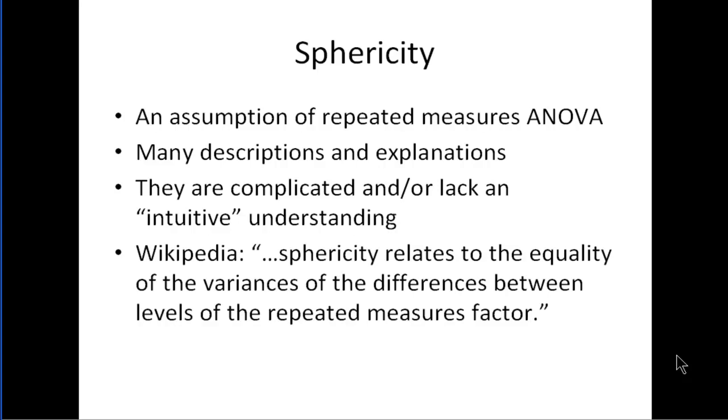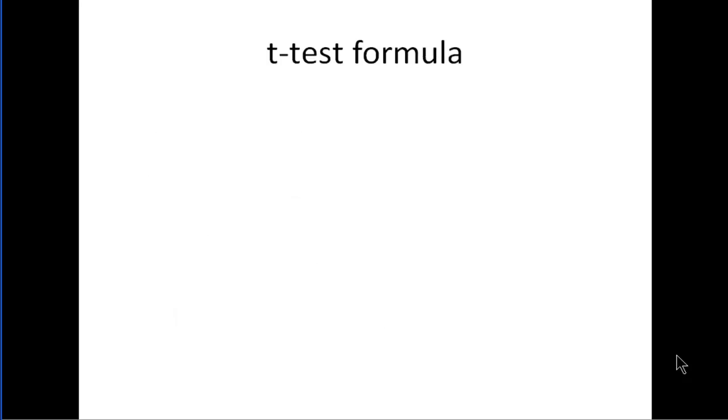And here's how Wikipedia defines sphericity: sphericity relates to the equality of the variances of the differences between levels of the repeated measures factor. Even if you could understand what that was saying and you saw the calculations, I think you would still struggle to see why that's important. But I'd like to explain it in a different way so that you can understand why it's important or why it's different in the repeated measures case.